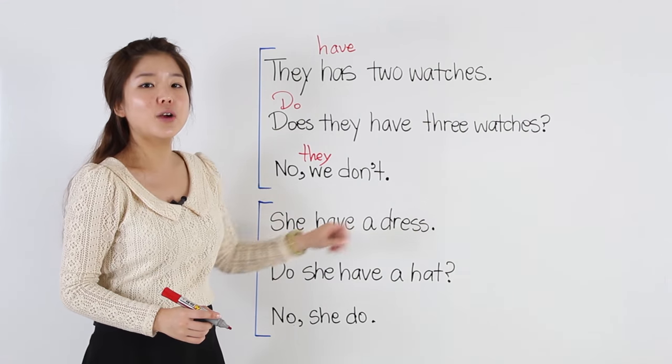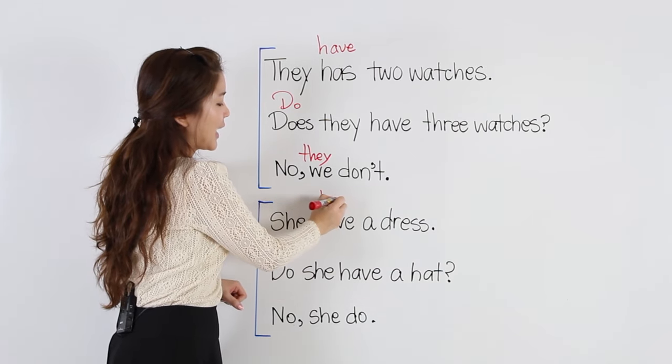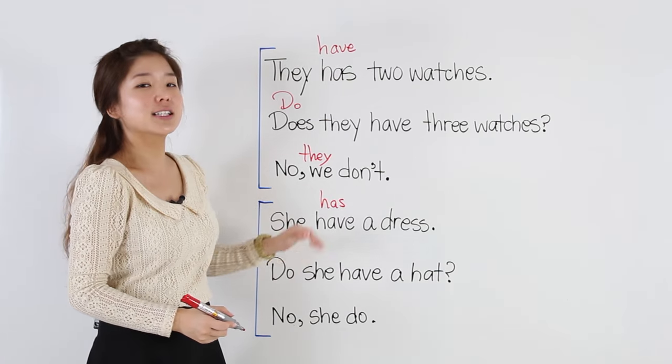Let's look at these. She have a dress. Remember, for she, we use has. She has a dress.